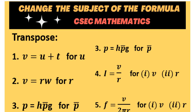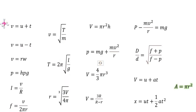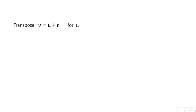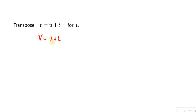In this video we will be looking at changing the subject of the formula. The first formula we're looking at is V equals U plus T. The quantity V is the subject, so we need to make U the subject. In order to do that, we will need to isolate U by removing the T that's connected to it by addition, so we will subtract T from both sides of the equation.